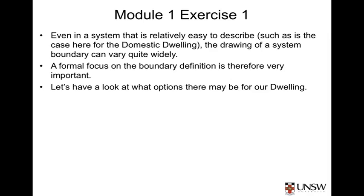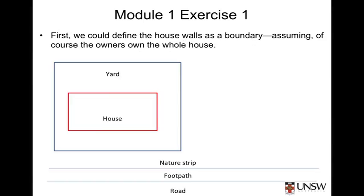Let's have a look at what options there might be for our dwelling. The first option might be to define the house walls as the boundary of the system. That assumes that the owners own the entire house. If they share the house, we'd have to draw our boundary around that portion of the house which they owned.